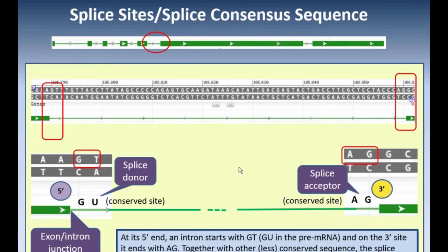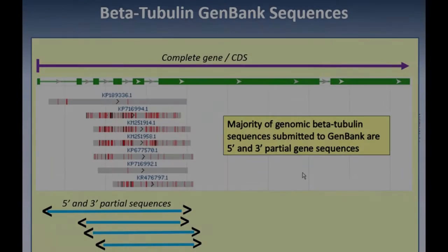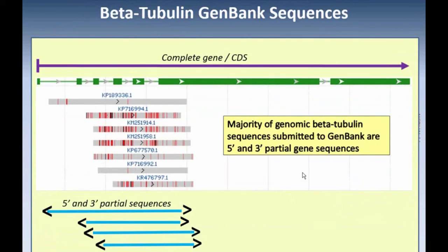If you indicate your coding region such that it includes the G of the GT splice donor, you will get an error in some submission tools, but more importantly it will be biologically incorrect. GenBank staff will ask you to correct it because it is not biologically valid. The GT-AG pairs are something to pay especially close attention to when submitting protein-coding data that has exons and introns.